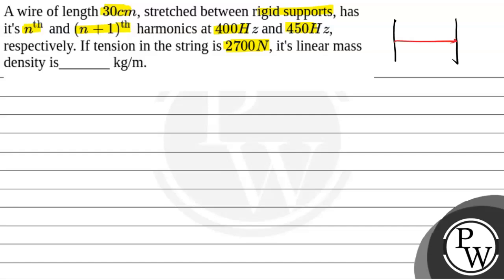This is the wire. Let's see, the tension is equal to 2700 and the nth and n plus 1th harmonics is 400 and 450 Hz. And the length of the wire is equal to 30 cm is equal to 0.3 meters. This is the length.